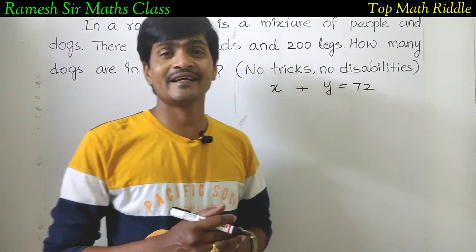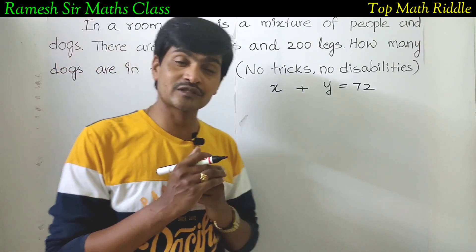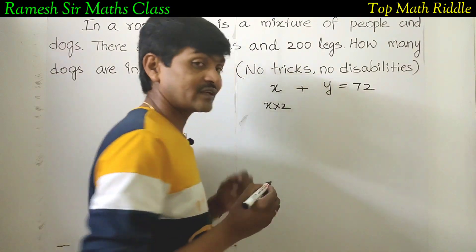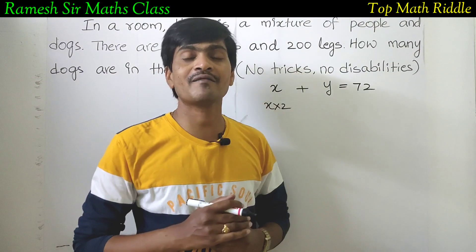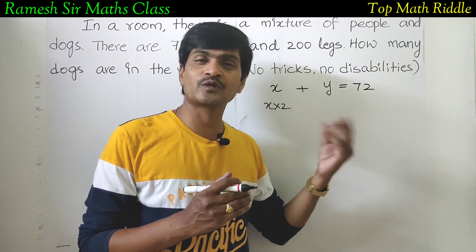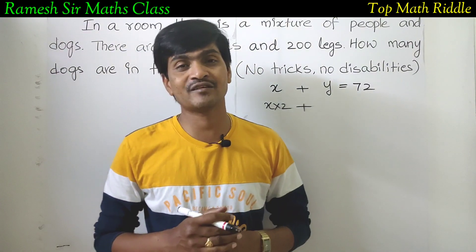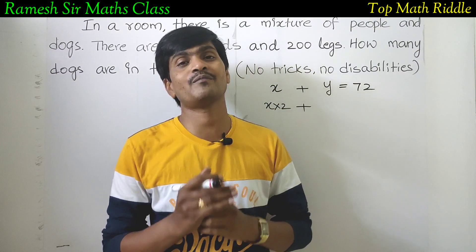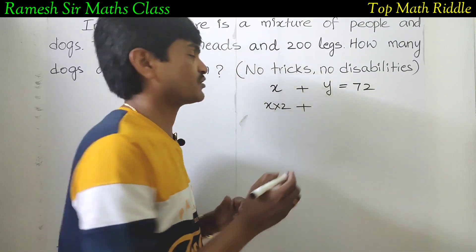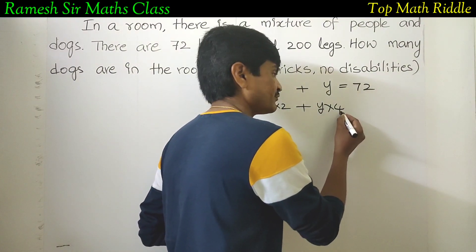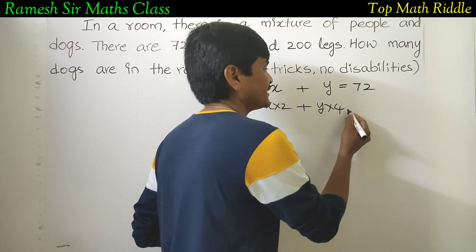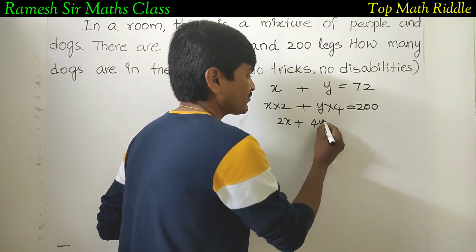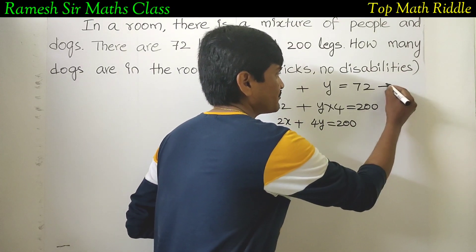Now, how many legs do human beings have? Each person has 2 legs, so the number of legs for humans is 2x. The number of dogs is y, and each dog has 4 legs, so dogs contribute 4y legs. The total number of legs: 2x plus 4y equals 200.